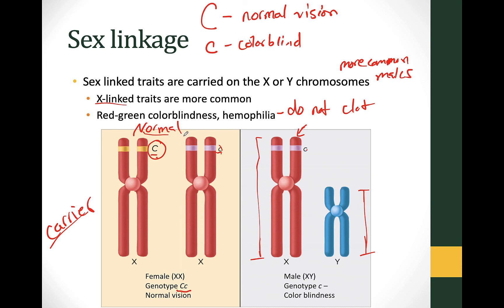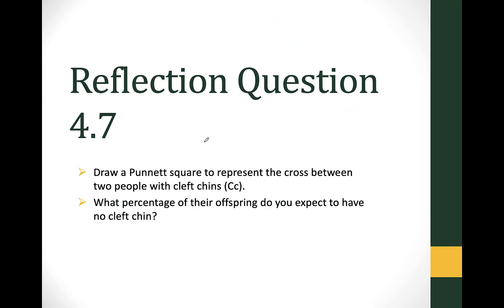A carrier is someone who is heterozygous for a trait — they don't show the disease or disorder but have the potential to pass it on to the next generation. Here's a male with only one little c and no second X chromosome to cover it up. With only one little c, this male is going to be colorblind. If you know anybody who's red-green colorblind, they're probably male — it's very unlikely for a female to be colorblind because she would need two little c's. Go ahead and practice doing a Punnett square.